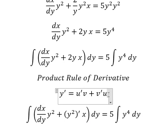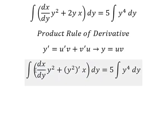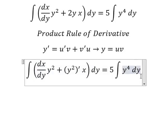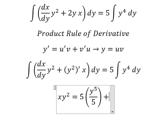So if I do this integration, you got y equals uv. So for this one, you got xy squared. The integral of y to the power of 4, you got y to the power of 5 over 5. And we put c.